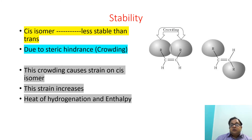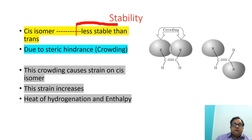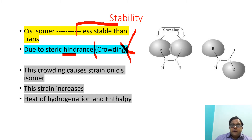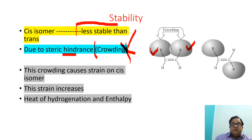Stability is the next physical parameter used for configurational identification. Cis isomers are less stable and trans isomers are more stable. Cis isomers are less stable due to steric hindrance, which exists due to crowding. The alkyl groups or other groups present on the same side in the cis position create crowding. In trans isomers, this crowding and steric hindrance is absent. This crowding introduces strain in the cis isomer, which increases the heat of hydrogenation and the enthalpy.